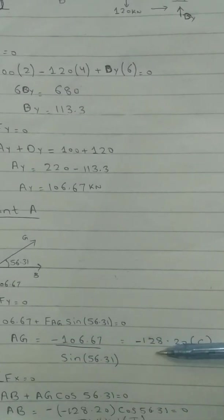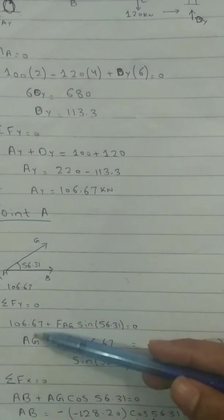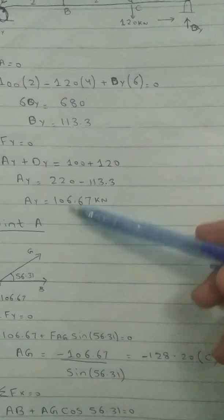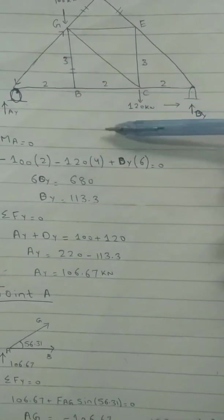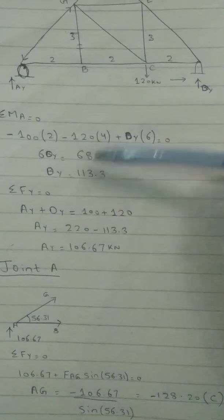So 106.67 plus AG sin theta is equal to zero. You can calculate AG is equal to minus. Minus sign means the force inside this member is in compression, so you can mark the signs for your own convenience so you can remember which force is in tension or which is in compression. AG is in compression.